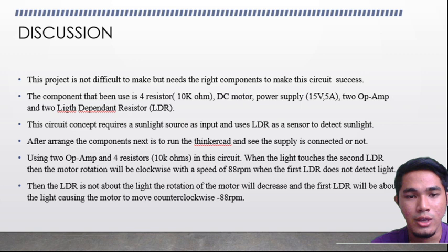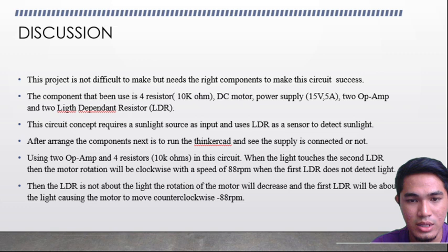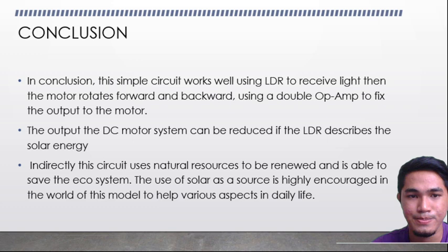Using 2 op-amps and 4 resistors in this circuit: when the light does not touch the second LDR, the motor rotation will be clockwise at 88 RPM. When the first LDR does not detect light, the motor rotation will decrease. When LDR1 is exposed to light, the motor moves counter-clockwise at negative 88 RPM.